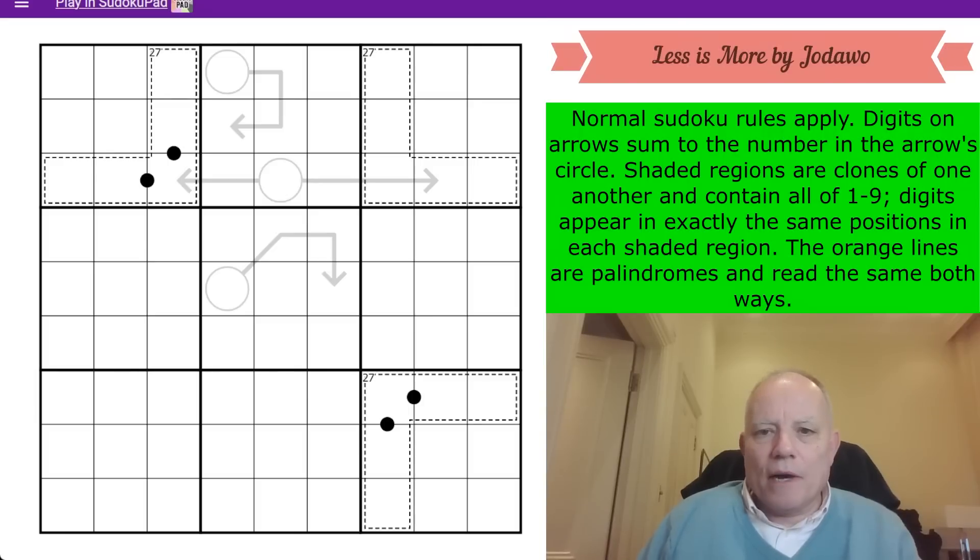Less is More by Jodawo. Normal Sudoku rules apply - we're putting 1 to 9 in every row, column, and 3 by 3 box. Identical digits cannot be a chess Knight's Move apart. Here is part of the key to what's going on in this puzzle. None of the yellow cells could be the same as the purple cell, because they would be a chess Knight's Move away. Sometimes that rule can do quite a lot of heavy lifting in a puzzle and reduce the need for further markings.